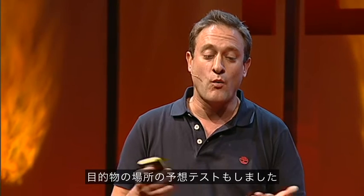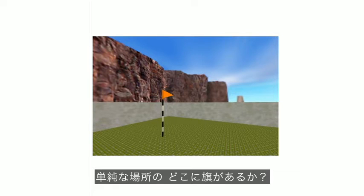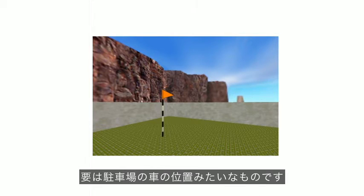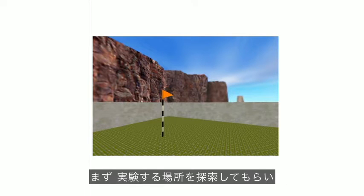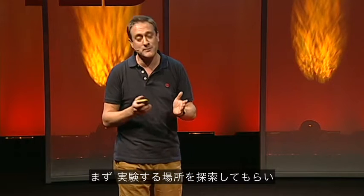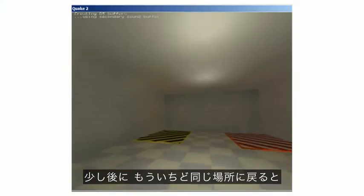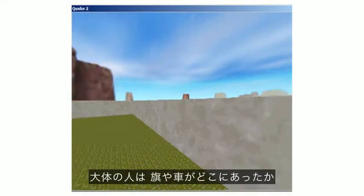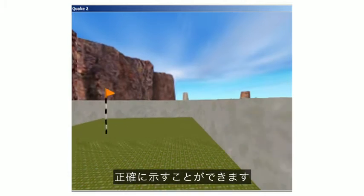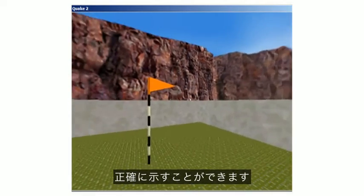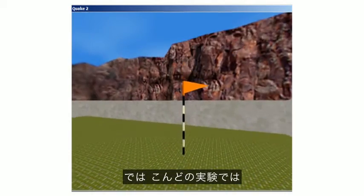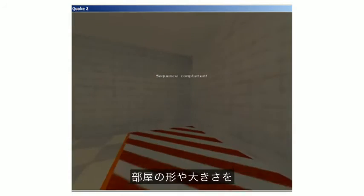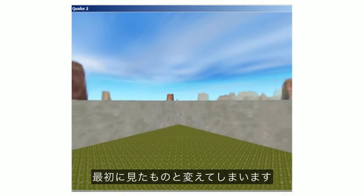We can also test where we think objects are, like this gold flag in simple environments, or indeed where your car would be. So we can have people explore an environment and see the location they have to remember. And then if we put them back in the environment, generally they're quite good at putting a marker down where they thought that flag or their car was. But on some trials we could change the shape and size of the environment like we did with the place cell.